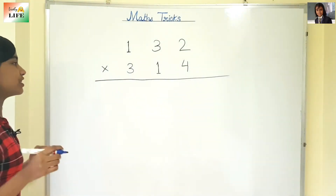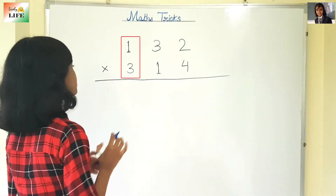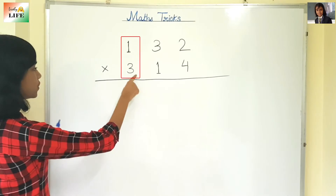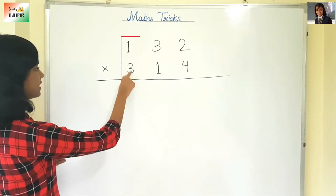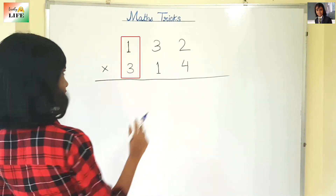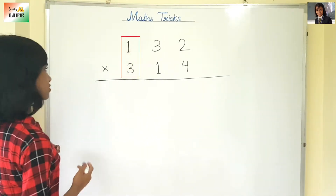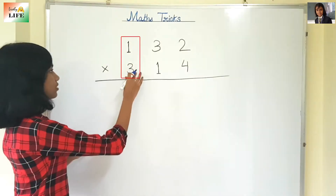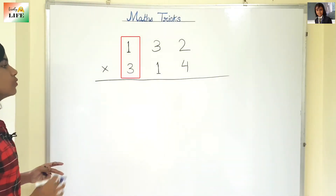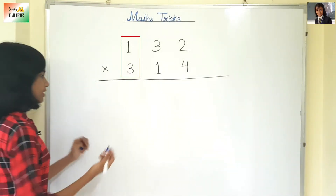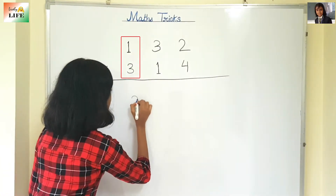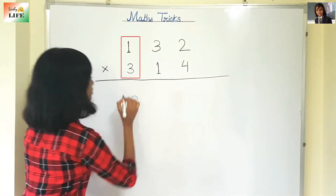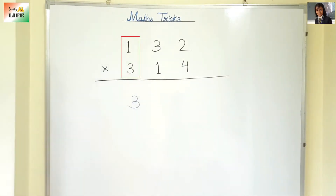First, what we are going to do is multiply this number with this number — the hundreds digit of this. So 3 times 1 is 3.